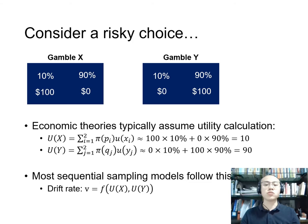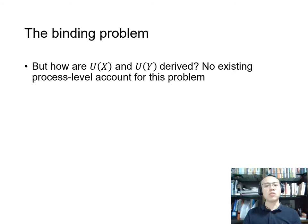In the sequential sampling literature, most models also follow this tradition by calculating some multiplicative utility for both options, and then define a drift rate V which is a function of these two calculated utilities.